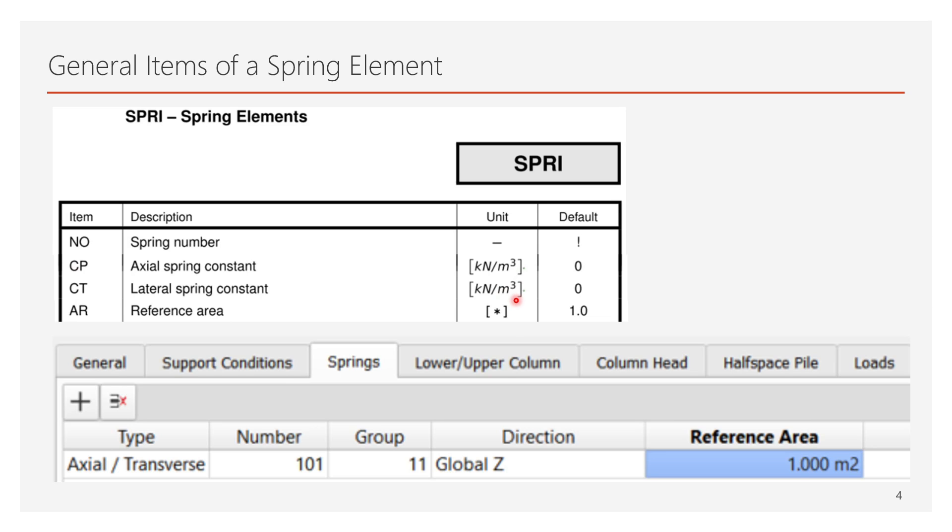All the input values for Cp and Ct are referred to a so-called reference area AR, which has different meanings based on the type of element the spring has been assigned to. I will explain in detail what the reference area is exactly, element-wise, in the second part of this video.